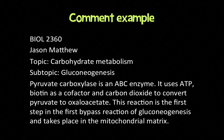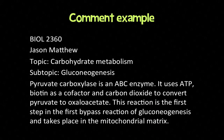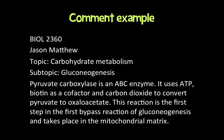Here's an example of a comment format. You put the course code — in this case BIOL 2360 — your name, Jason Matthew, then give the topic you're going to talk about, which is carbohydrate metabolism. Be more specific with a subtopic: I'm going to talk specifically about gluconeogenesis. The fact I'm giving is that pyruvate carboxylase is an ABC enzyme — it uses ATP, biotin as a cofactor, and carbon dioxide to convert pyruvate to oxaloacetate. This reaction is the first step in the first bypass reaction of gluconeogenesis and takes place in the mitochondrial matrix.